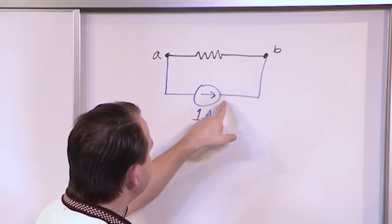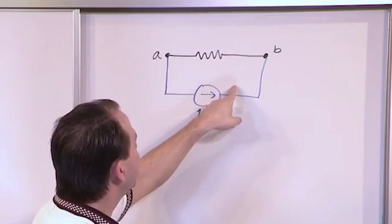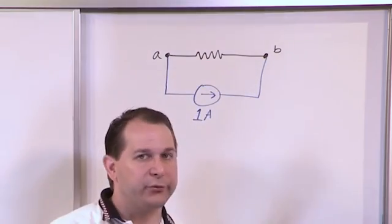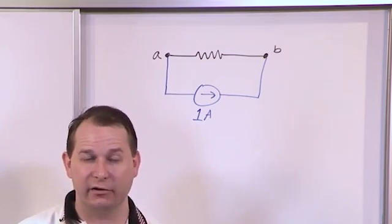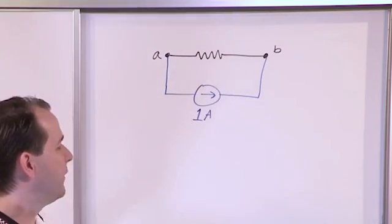But no matter what, you know that because it's a current source, there is 1 amp flowing through that resistor. For definite, you know this because it's a constant current source. So there's 1 amp going through that resistor.